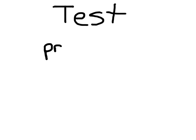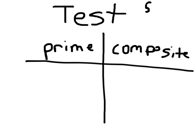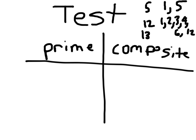It is time for your test. Make yourself a t-chart for prime and composite. First, list the factors for the number 5, for 12, and for 13. The factors of 5 are 1 and 5. The factors of 12 — listed in order — are 1, 2, 3, 4, 6, and 12. The factors of 13 are 1 and 13.